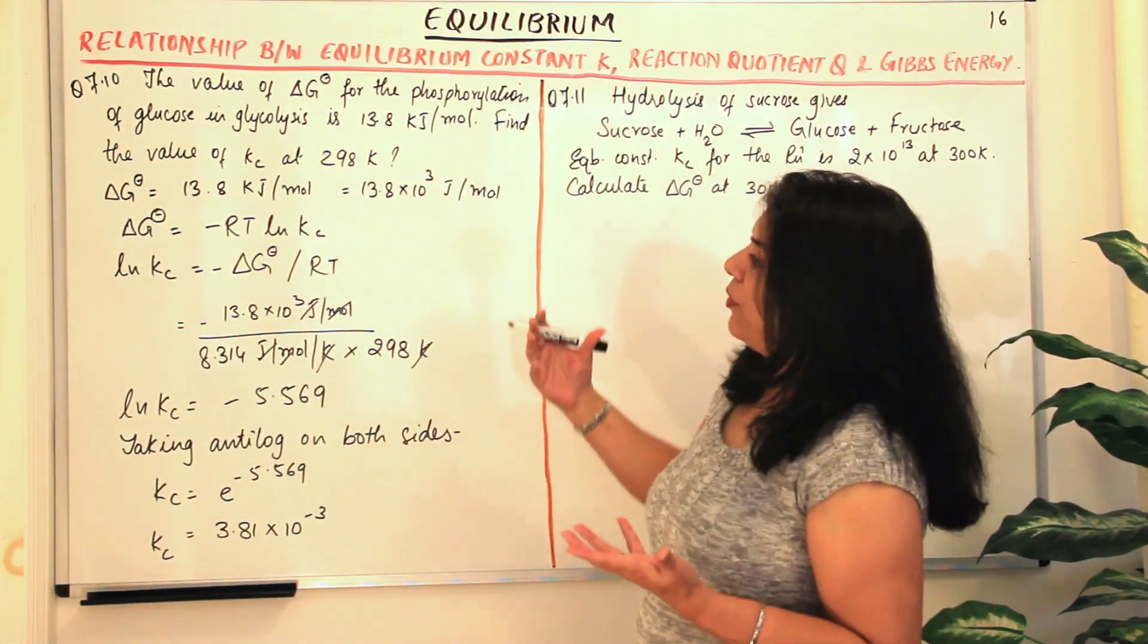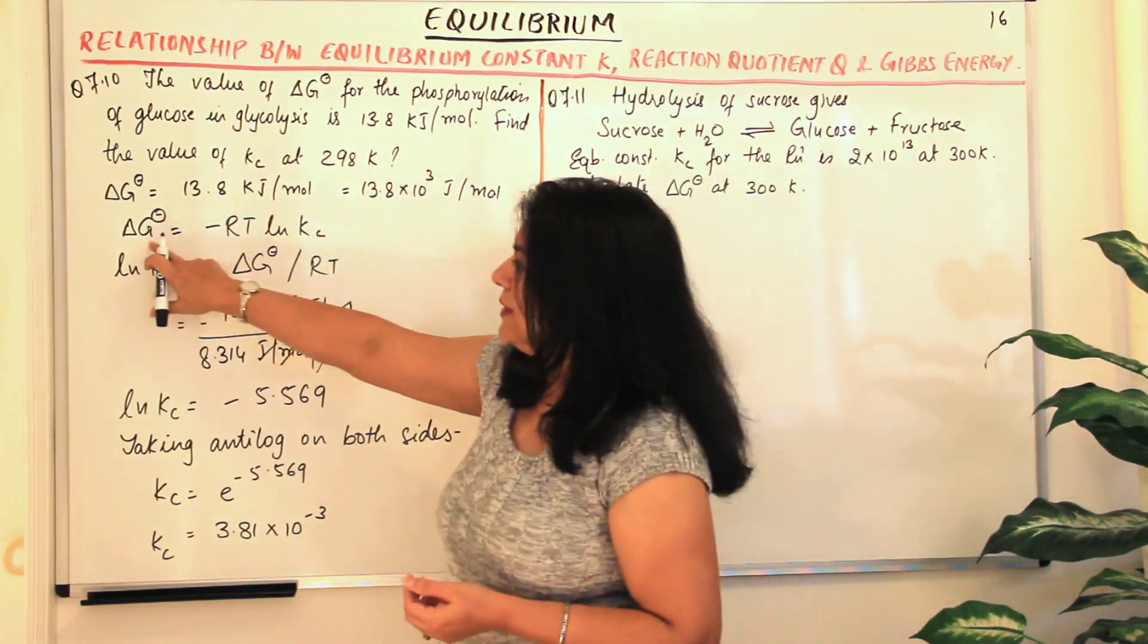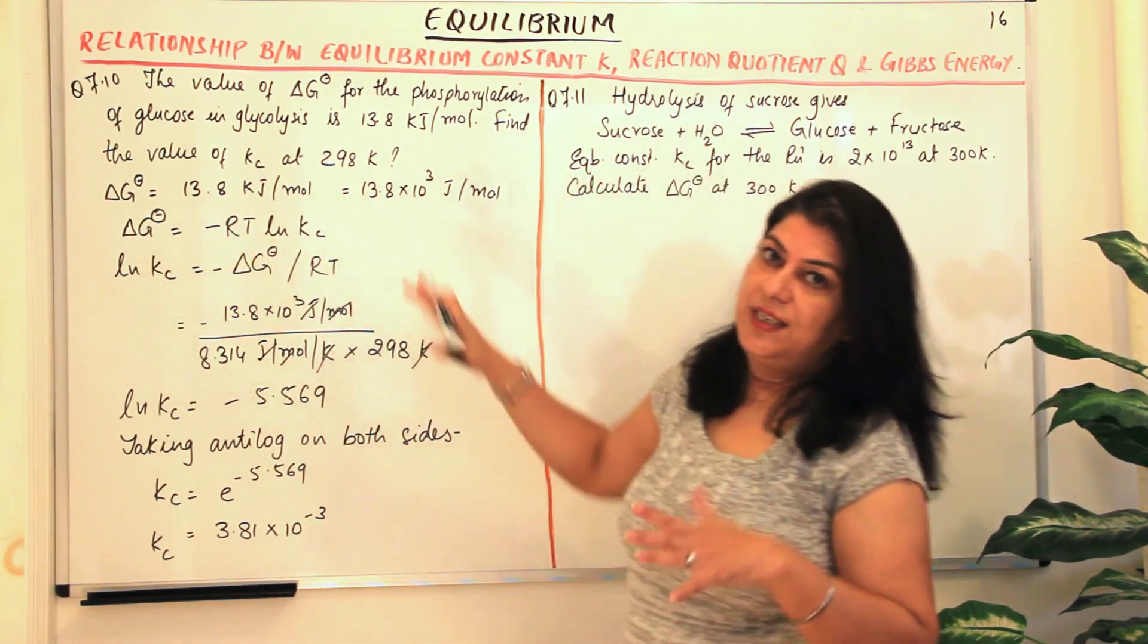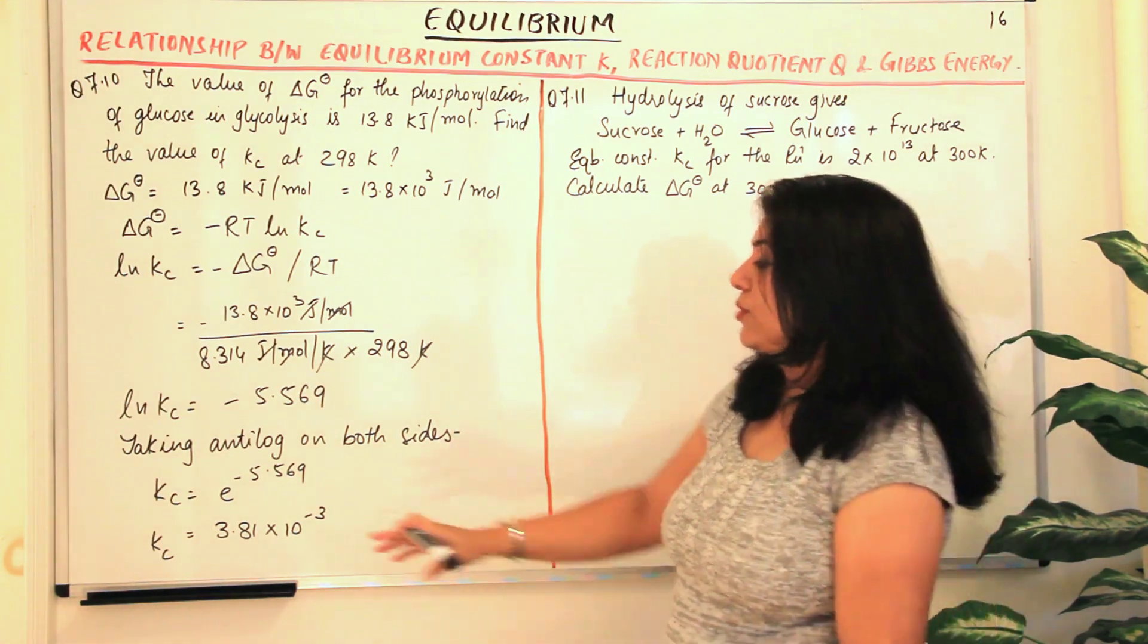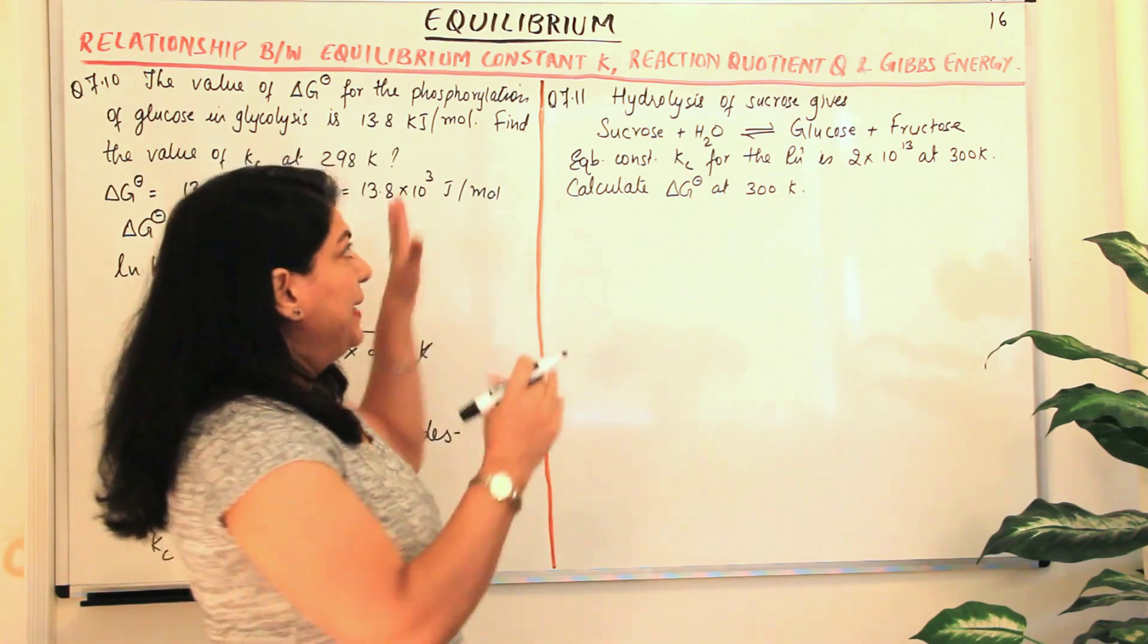So it's a very simple problem. We were given the value of delta G naught, and in the equation delta G naught is minus RT ln Kc. We've substituted the values and found out the value of Kc. One more problem just to explain this relationship.